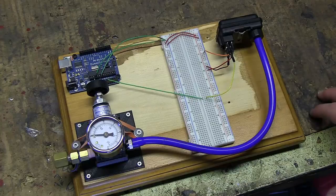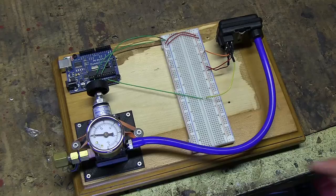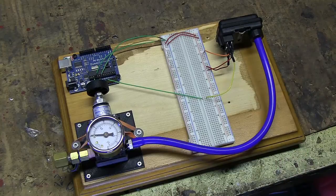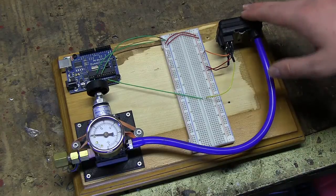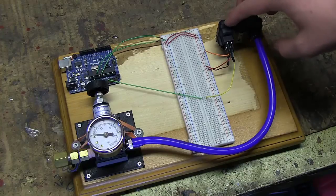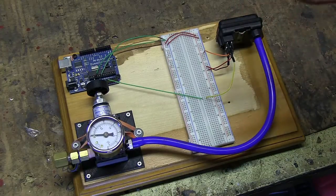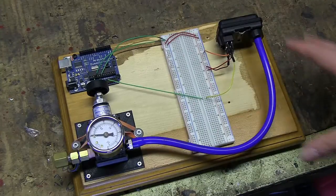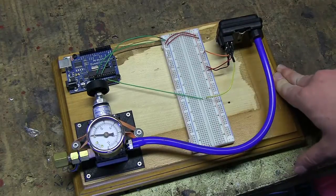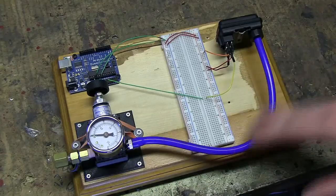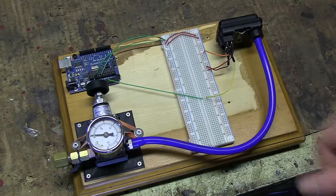But the only thing is I can't find any documentation from the factory service manual from Mazda online. I can't find any documentation on the voltage response of this sensor with a pressure input. So I built this test apparatus to input different pressures and then measure the voltage output.